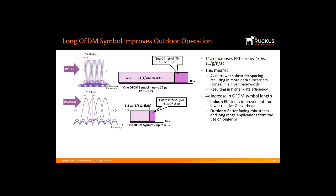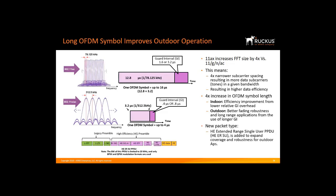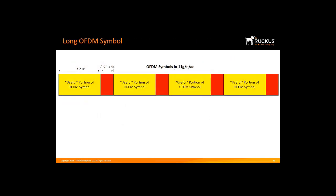For outdoor, the long OFDM symbol of 12.8 microseconds combined with a 3.2 microsecond guard interval addresses the long delay spread in an outdoor environment due to multipath reflections, allowing more robust outdoor operation. Outdoor operation is handled by using a new extended range single-user packet type. The diagram at the top shows the OFDM symbol for 11G, N, and 11AC. The red portion represents the preamble, and the yellow portion is the useful data portion composed of OFDM symbols.